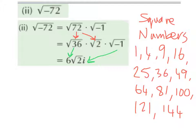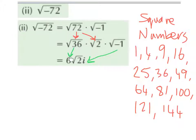The list of square numbers goes on forever. Whenever we're breaking up a number into roots, we want to try and break it up into a factor pair that contains a square number. That's why we broke 72 down to be 36 multiplied by 2, because 36 is a square number and the square root of 36 is 6.